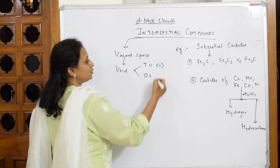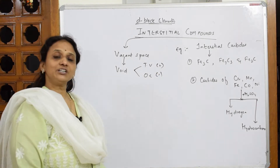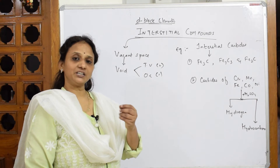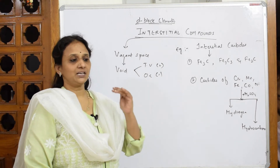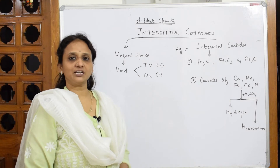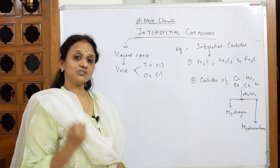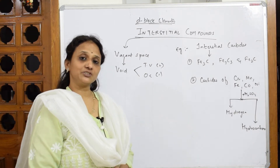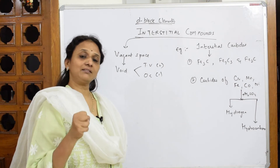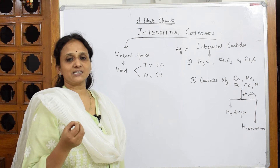How many tetrahedral voids do we have? Two, and octahedral void is one. As I have already said, in D-block elements the atomic radii variation is very less. When I compare scandium, titanium, vanadium, chromium, and other elements, the variation in atomic radii is very less. Because of this less variation, I can easily fix smaller atoms into the voids present in that particular metal.